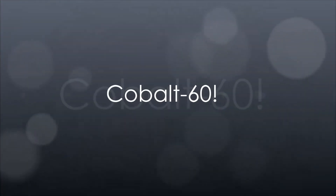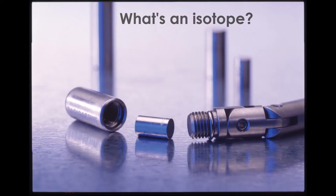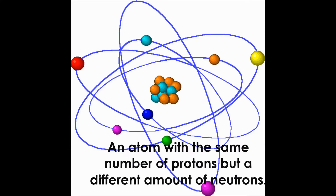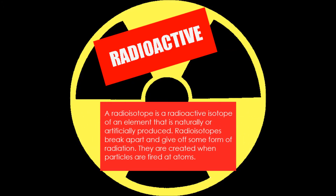Cobalt-60 is a radioisotope. But first, what's an isotope? An isotope is an atom with the same number of protons but a different amount of neutrons. A radioisotope is a radioactive isotope of an element that is naturally or artificially produced. Radioisotopes break apart and give off some form of radiation. They are created when particles are fired at atoms.